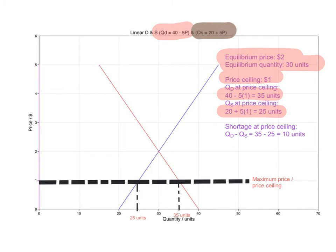You can see that the quantity demanded is greater than the quantity supplied. To calculate the shortage, we know that price ceilings result in excess demand or a shortage. Just subtract the quantity supplied from the quantity demanded: 35 minus 25 equals 10. This is how to calculate the shortage at this maximum price.